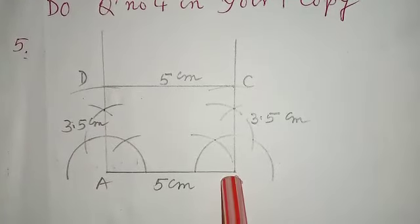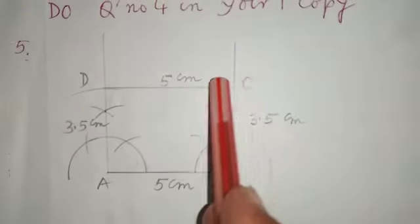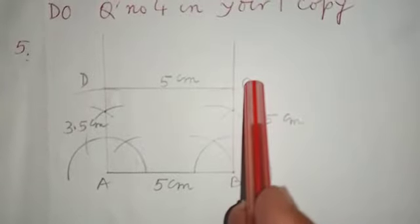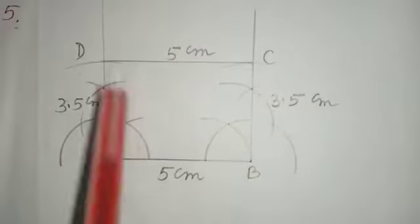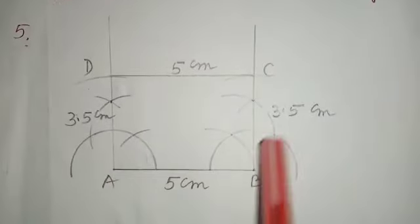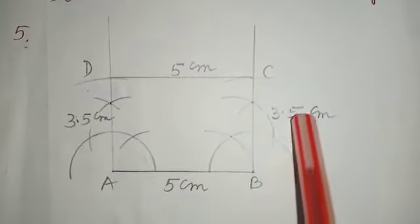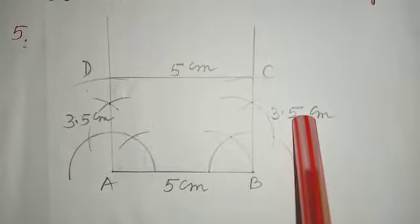From B again we cut an arc of 3.5 cm and we will get a point C. Now join C to D. We will have the required rectangle ABCD whose two adjacent sides are 5 cm and 3.5 cm.